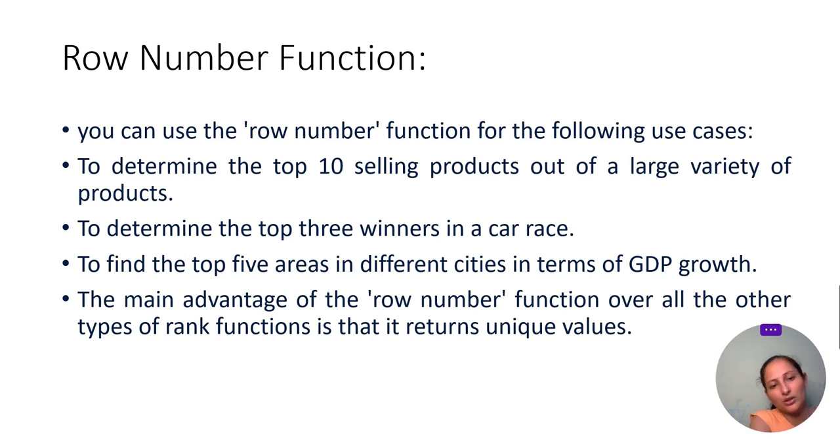The row number function has various kinds of advantages over rank and dense rank. You can use the row number function where you have exact restrictions—top 10 products, top 3 products—whatever the condition, you have to see only top 5 or top 3. You don't want to see the skip in rows.